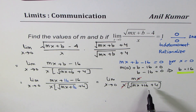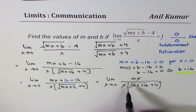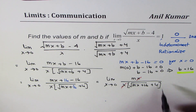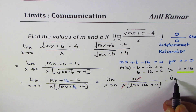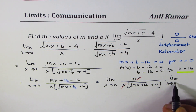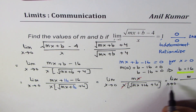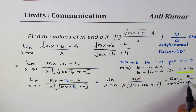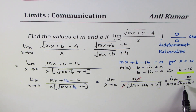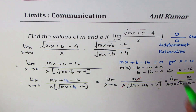We can cancel x from numerator and denominator. After canceling, we get m over (square root of mx plus 16 plus 4). So the expression becomes the limit as x approaches 0 of m over (square root of mx plus 16 plus 4), and we want this limit to equal 1.